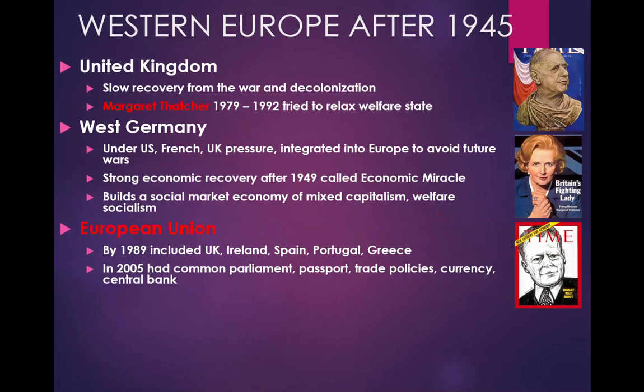Let's talk about some specific countries. The United Kingdom went through decolonization after World War II, freeing a lot of their colonies — India in 1949, and their African countries in the 1950s and 60s. Throughout most of the 1940s, 50s, and 60s there were Labour governments, so the government got more involved, and England got universal health care. In 1979, Margaret Thatcher, a conservative, was elected prime minister. She tried to relax parts of the welfare state and do deregulation, giving more power to private corporations.